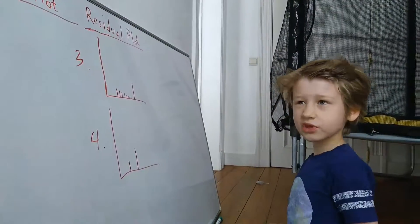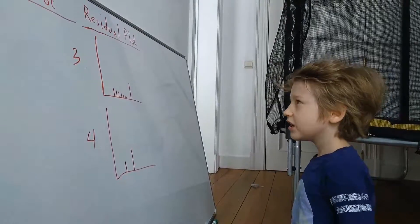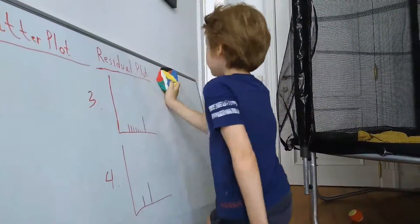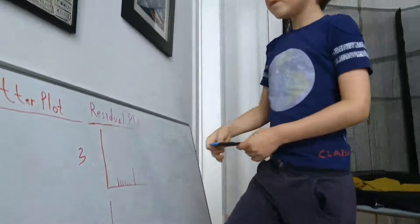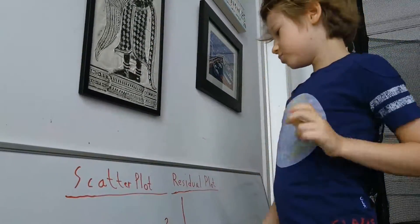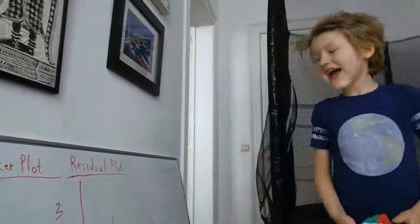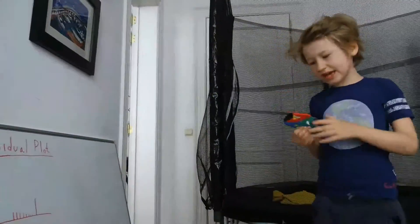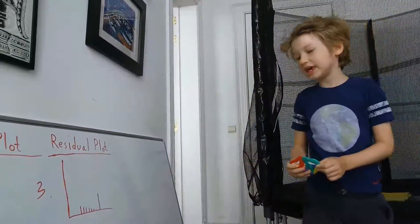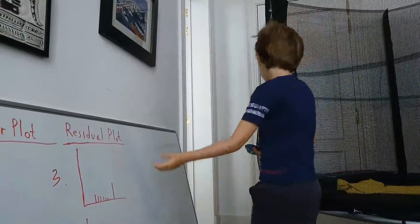I think this really concludes this video. This was about the residual plot — the difference between a scatter plot and a residual plot, as well as combining the residual plot with Anscombe's quartet.